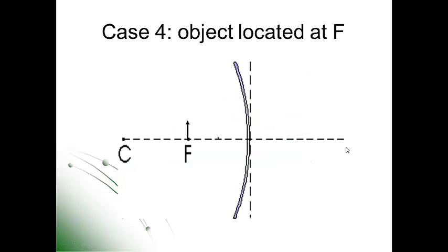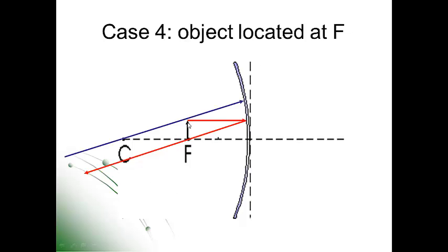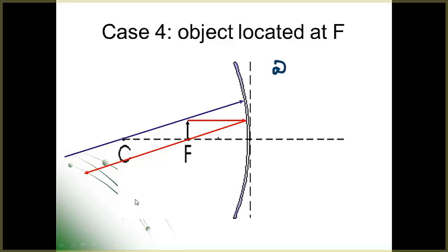In case number four, the object is located at the focal point. Ray one, parallel to the axis, reflects through the focal point. Notice we can't draw ray two — since we're at the focal point, we can't go through both the tip of the arrow and the focal point and hit the mirror at the same time. So we draw ray three, which connects the top of the arrow with the center of curvature; if it strikes the mirror, it reflects back on itself. These two rays are completely parallel and will never cross, so the image is located at infinity — it's not a clear, distinct image, and we can't do the math calculations.